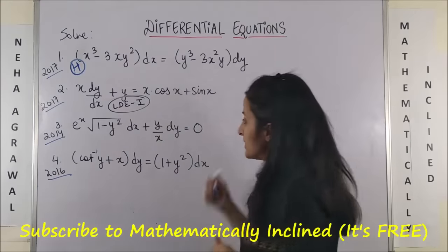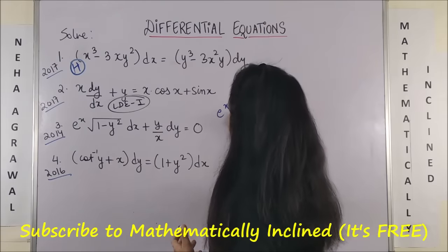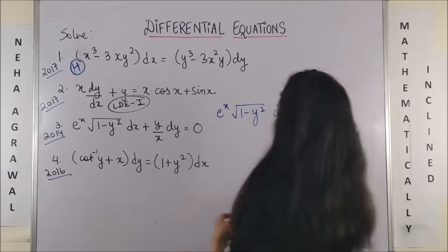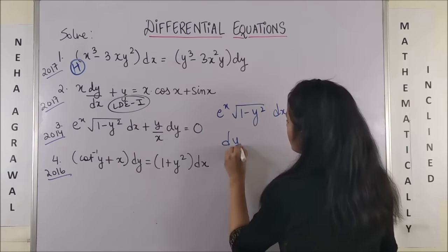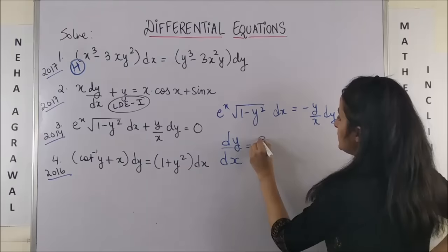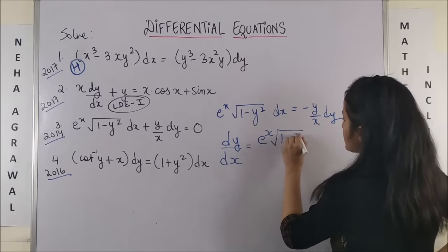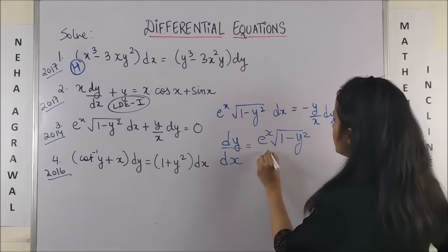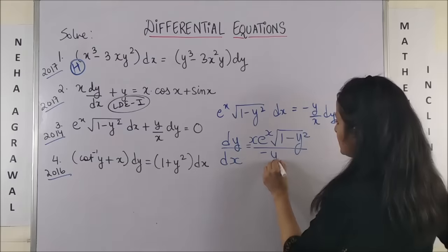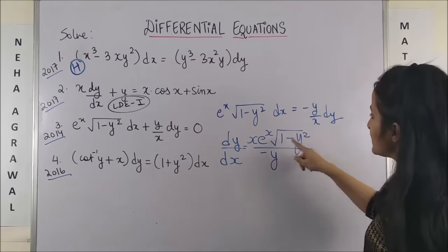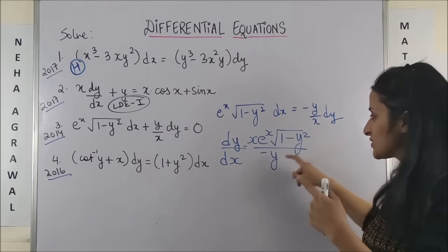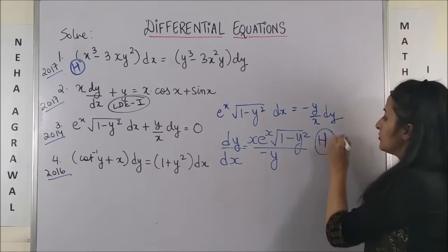Now, let's look at the third question. Same logic. Let's express dy by dx. This will be e raised to power x into root of 1 minus y square dx is equal to minus y by x dy. This means dy by dx is equal to e raised to power x into square root of 1 minus y square times x upon minus y. Now, please look at each and every term. I don't see this as homogeneous. You see x, e to the power x, then suddenly 1 minus y square, y. So, not homogeneous.